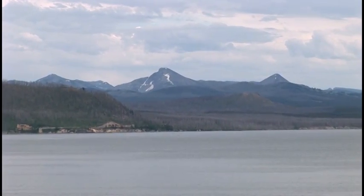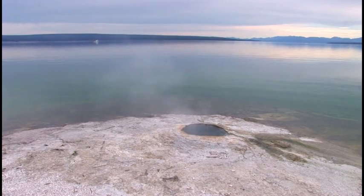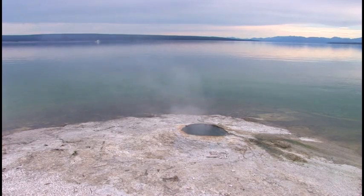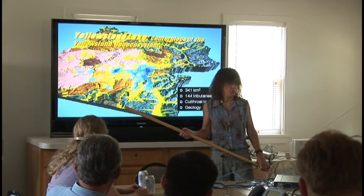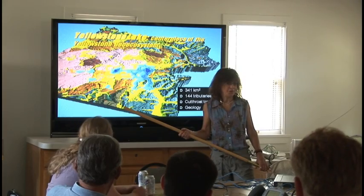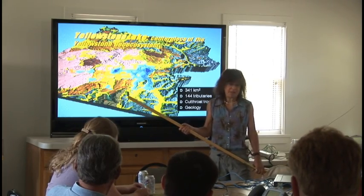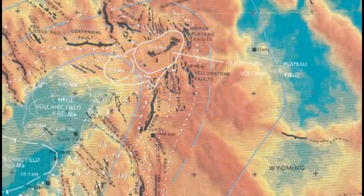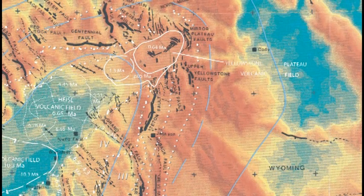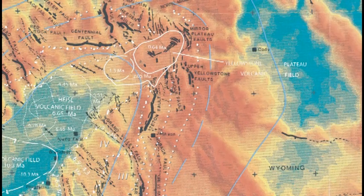Yellowstone Lake has many hydrothermal features in it. In our mapping starting in 1999 going to 2003, we were able to identify more than 650 hydrothermal vents and more than five active hydrothermal explosion craters.